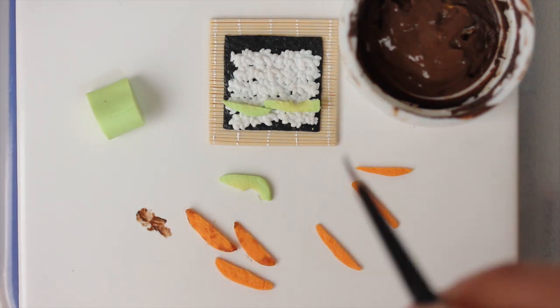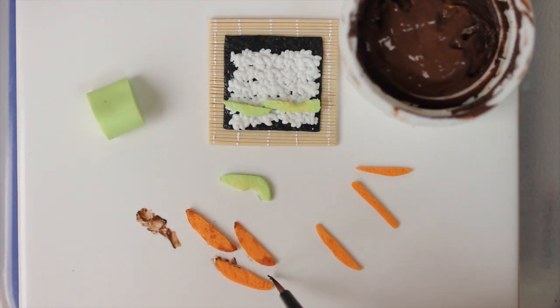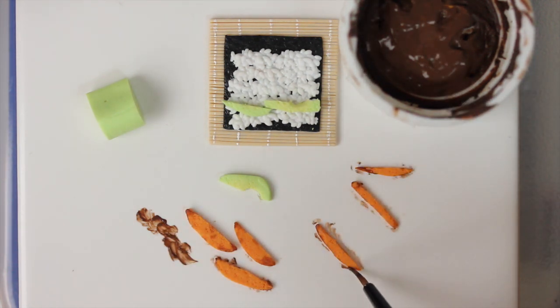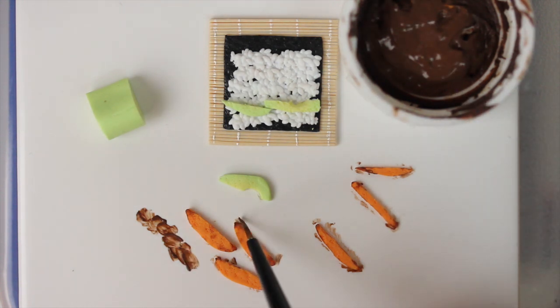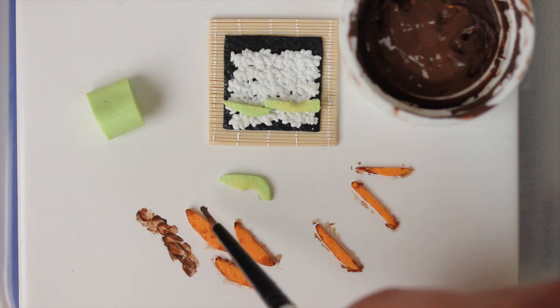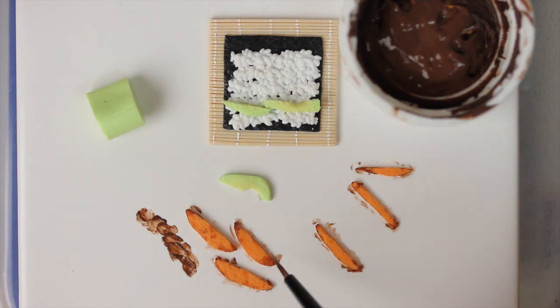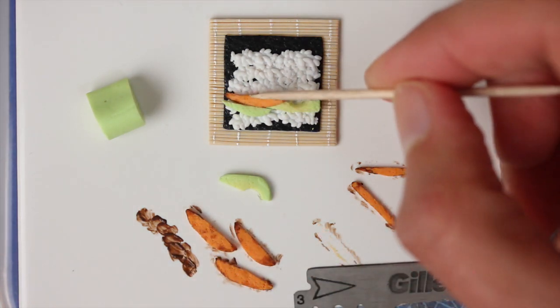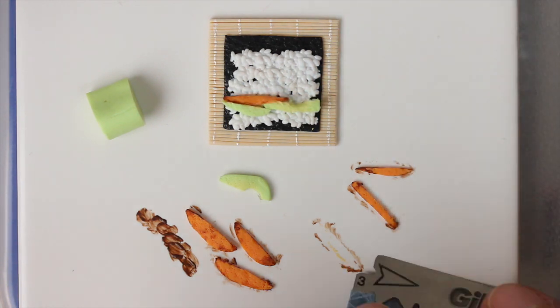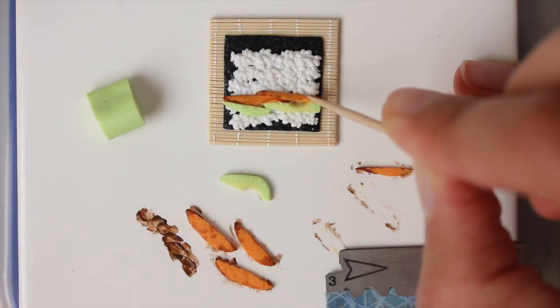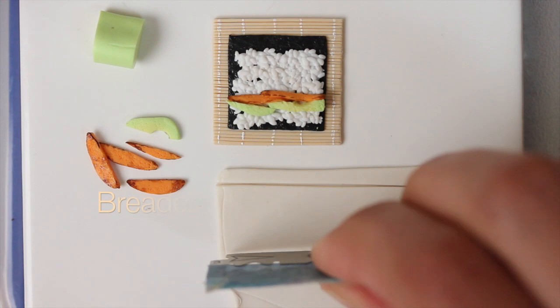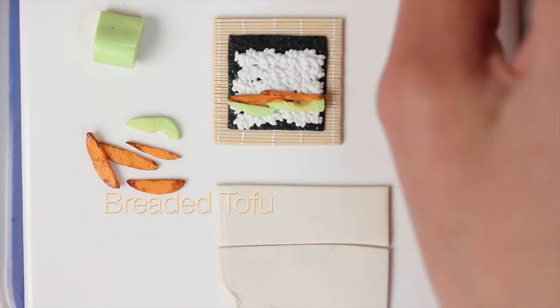I usually even add cucumber to that, and I think it works very well together. Then you just add some extra paint because it's roasted sweet potato, so you really want that extra crisp coloring. Then I made some breaded tofu.